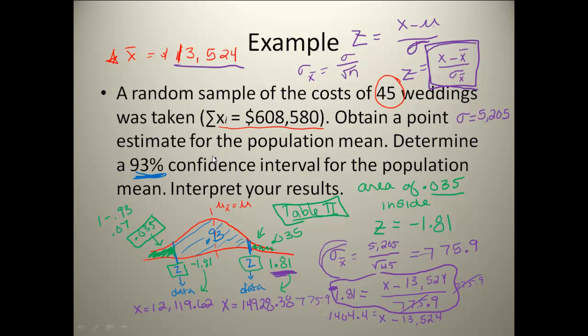Now if you think back to the problem we were trying to do, we were trying to do a 93% confidence interval for the population mean. Well, our confidence interval is between $12,119.62 and $14,928.38. So right here would be our confidence interval.